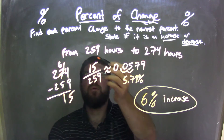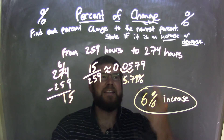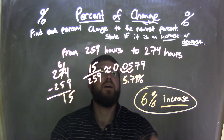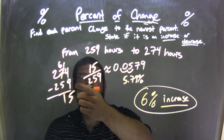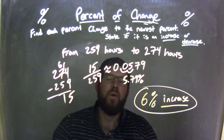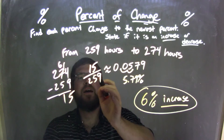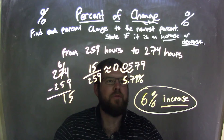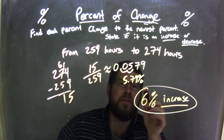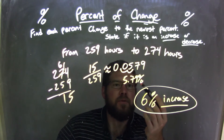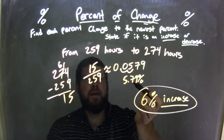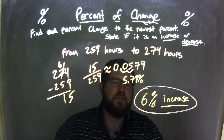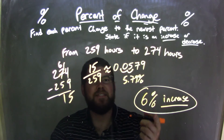Let's recap. We started with 259 hours to 274 hours. We first saw that it was going up, so it's an increase. We subtract 259 from 274 to get 15. We then take that 15 hours and divide it by our first number, 259. That got us approximately 0.0579. We moved the decimal over two units to get 5.79% to convert the decimal to a percent, but then we needed to round it. The 7 causes the 5 to round up to a 6, and so we have a final answer of a 6% increase.